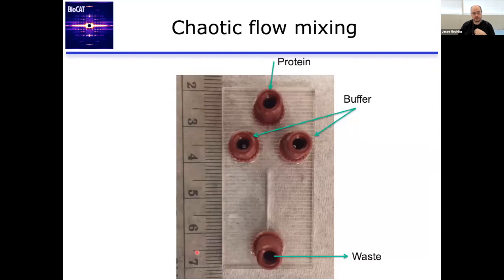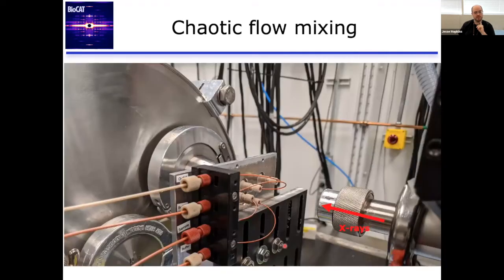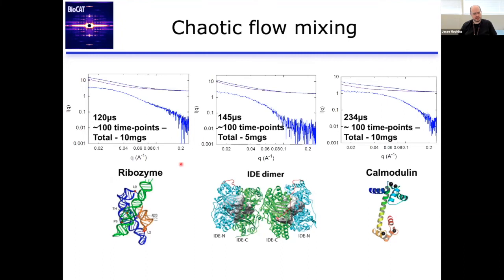This is what the fast mixer looks like in practice — just a small piece of quartz, but you can see the inlets and outlet. New mixers are slightly larger with a longer outlet but very similar. In the X-ray beam you can see those same inlets and outlets, and the X-rays coming in, scattering, and going off to the detector.